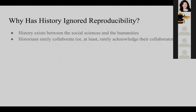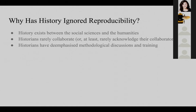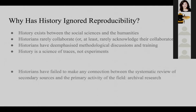Historians have also de-emphasized methodological discussions and training. This is relegated mostly to professional magazines like Perspectives on History from the American Historical Association rather than the journals in the field. And history is a science of traces, not experiments. Finally, I think historians have failed to make a connection between the systematic review of secondary sources — basic literature reviews — and the primary activity of the field, which is archival research, and how applicable systematic review processes, which really value reproducibility, protocols, transparency, and sharing, could be applied to archival research.